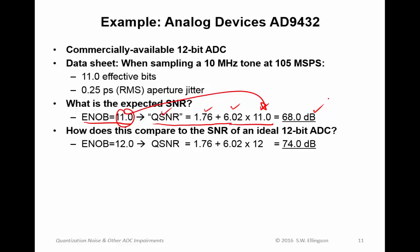How does this compare to the signal-to-noise ratio of an ideal 12-bit ADC? Well, the effective number of bits for an ideal 12-bit ADC is 12 bits. So if I work this calculation again, I get 74.0 dB.